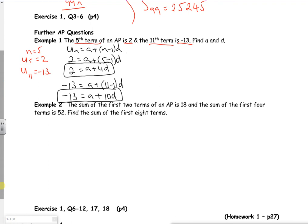Remember you want it. X's and Y's equals numbers. So A plus 4 D is 2. A plus 10 D is minus 13. So if you put that into simultaneous, it should give you A is 12. And D is minus 2.5. Which you'd expect if the 11th term is negative. You'd expect D to be minus. So that's quite cool that.